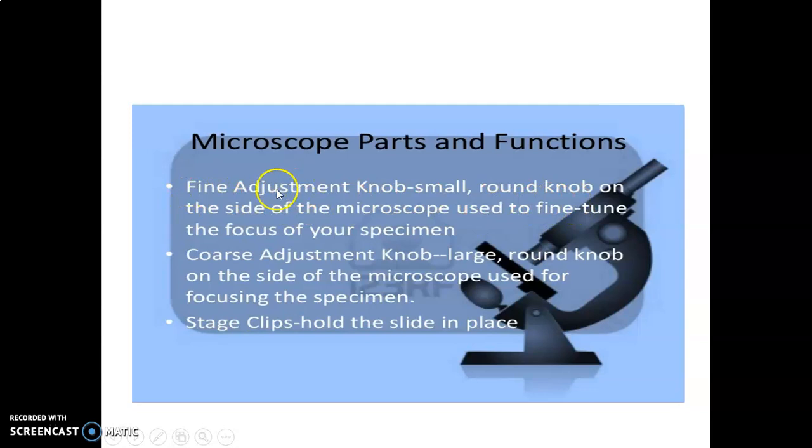It's usually on the side of the microscope, and the function of the fine adjustment knob is to fine-tune your focus. Then we have a coarse adjustment knob. This one is large but also round on the side of the microscope, and it is the one that you initially use to focus on the specimen.